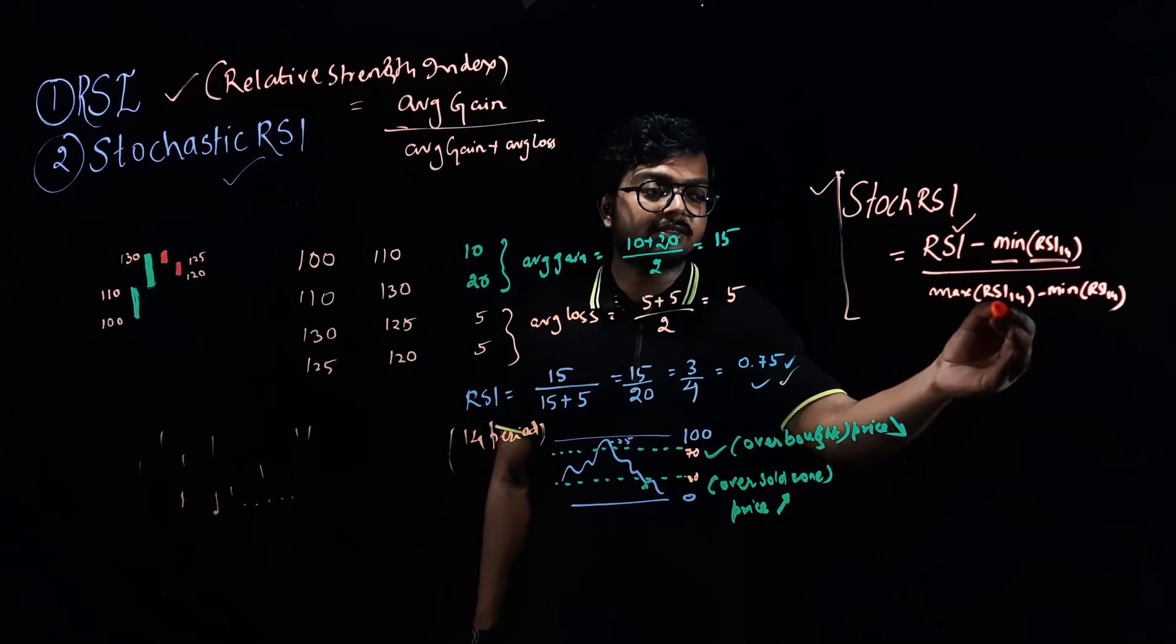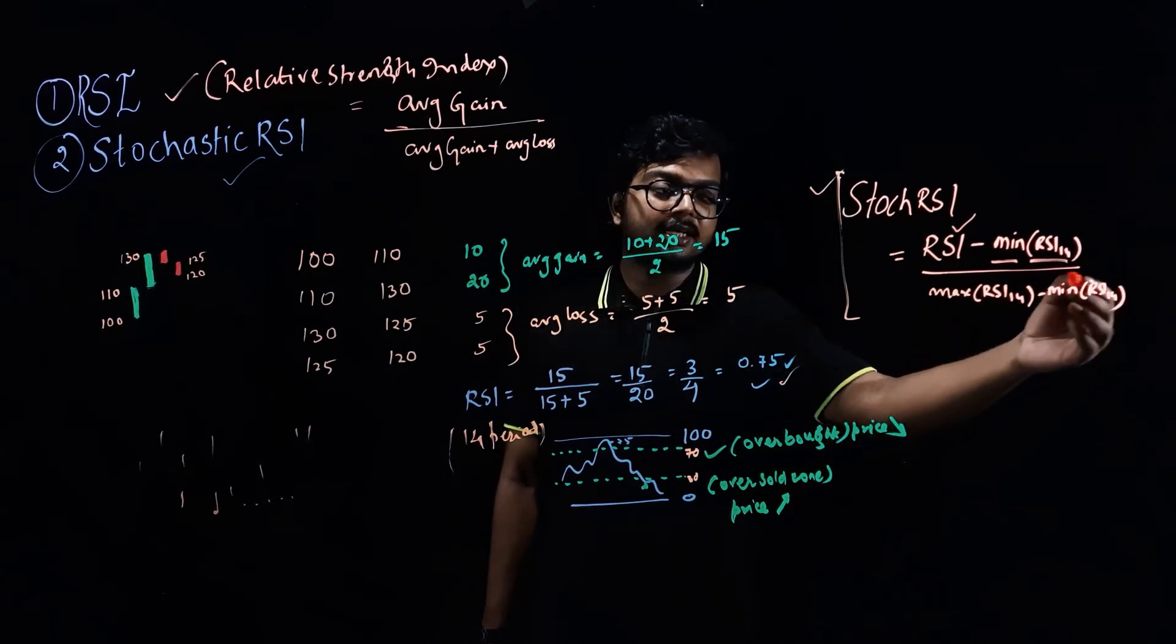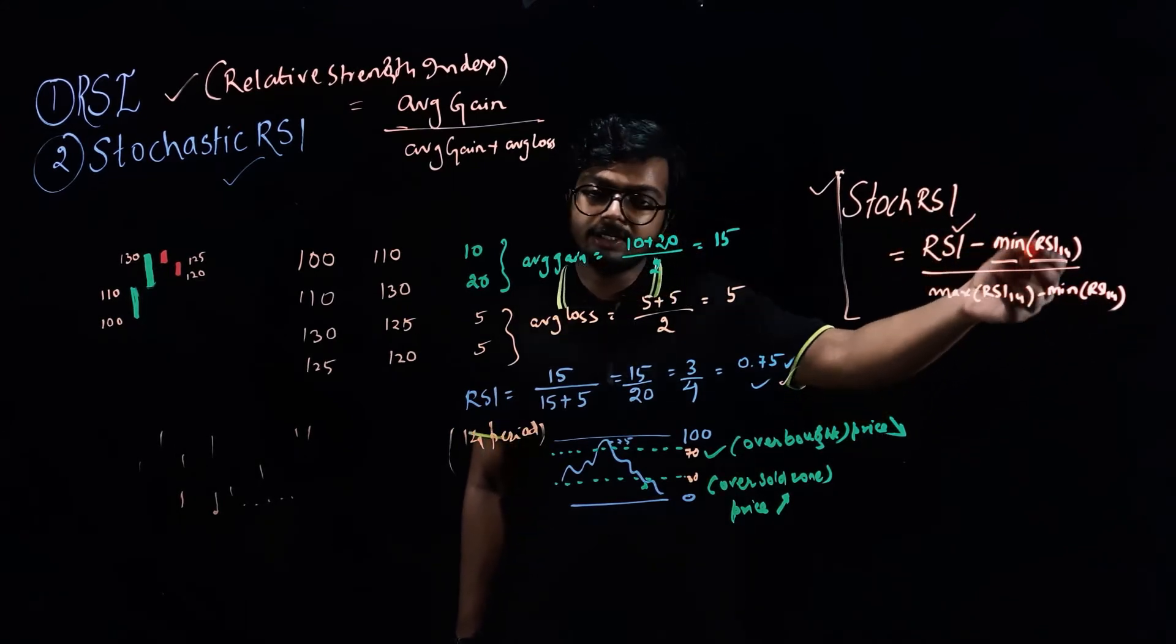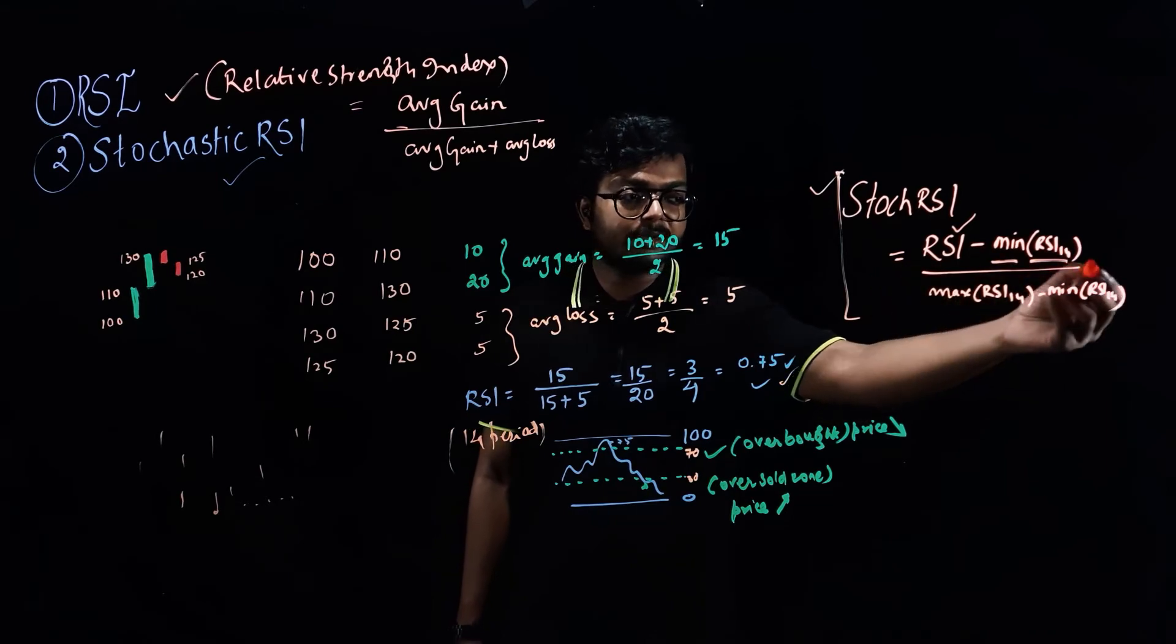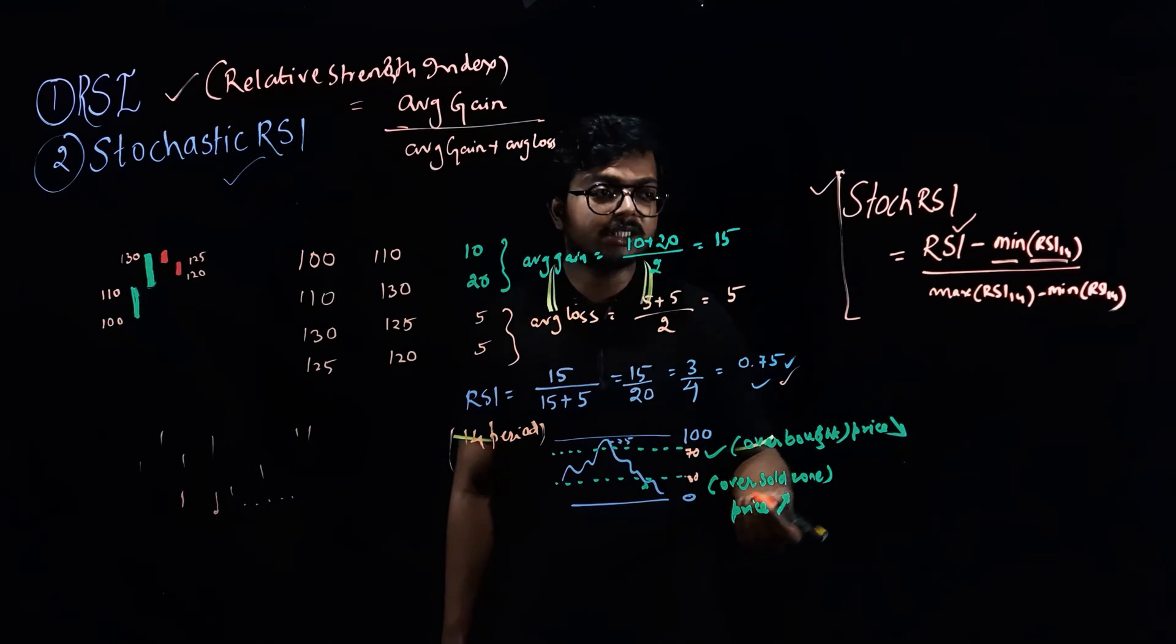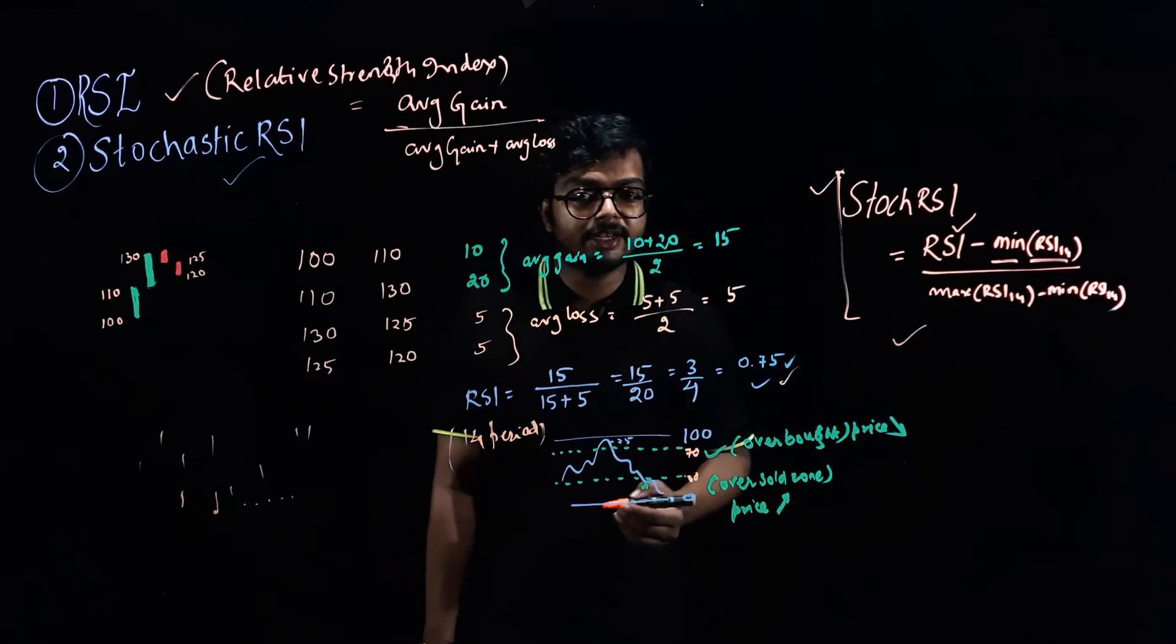So you take the mean of last 14 RSI, you take the max of last 14 RSI, and you also take the min of last 14 RSI. So what you do is RSI minus min of last 14 RSI whole divided by max of last 14 RSI minus min of last 14 RSI. So you would get a Stochastic RSI value.